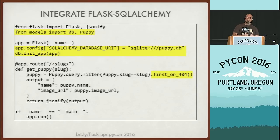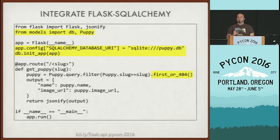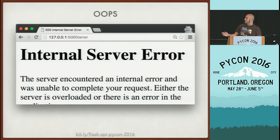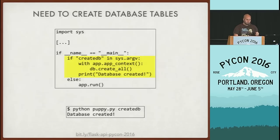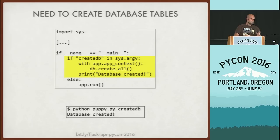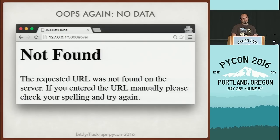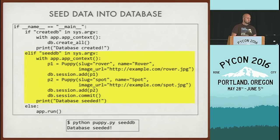There's a first_or_404 method added by Flask SQLAlchemy — a nice shortcut that gets the first item from a query, and if it can't find it, returns a 404 exception. When we try to run it, we get an internal server error — because you have to initialize the database before you can use it. You have to tell the database what structure the data should be in using db.create_all. And we also need to seed data into the database before we can pull it out in the views.